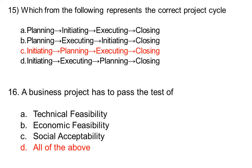A business project has to pass the test of: option A technical feasibility, option B economic feasibility, option C social accessibility, option D all of the above. The correct answer is option D, all of the above.